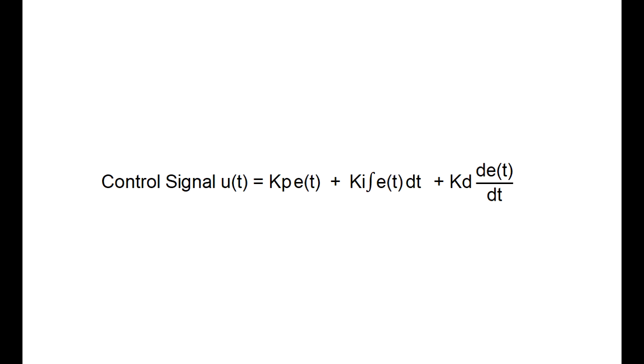The PID controller can be mathematically written out as shown where our control signal is a summation of the three mathematical operations. The P term involves taking the error and multiplying it by a constant Kp. The I term involves integrating the error over time and the D term involves taking the derivative of the error.